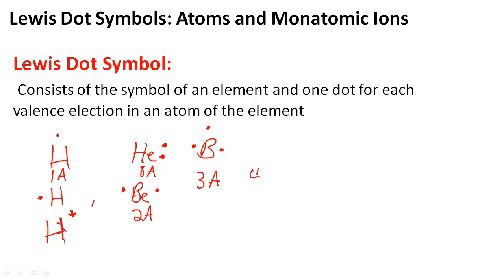So 4A becomes, let's say, carbon as an example. 1, 2, 3, 4 valence electrons. 5A, let's take N as an example. I'm just using the first elements in the group. So this is 5 valence electrons.